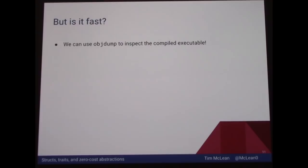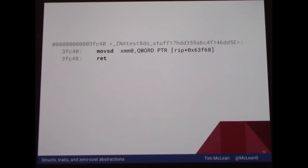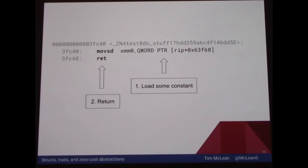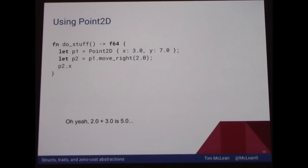We can tell if it's fast by looking at the actual executable produced by the compiler and examining the machine code that was generated. If we do that, we see it's actually very simple — it just loads some constant value and then returns that constant value. That constant is exactly what you'd expect: we're just adding two plus three, which is five. So it makes sense that we just always return five. The compiler saw through all the stuff around structs and Point2D, and optimized it all away.